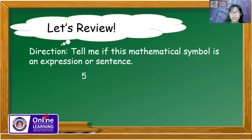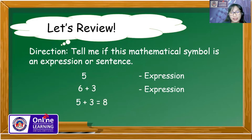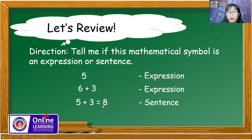Number 1: 5. Do you think it is an expression or a sentence? Yes, that is an expression. How about 6 plus 3? That is also an expression. Next: 5 plus 3 is equal to 8. That is a sentence. Why? Because the mathematical symbol states a complete thought — it has a verb, which is the equal sign. In mathematical language, the verb is the equal sign.